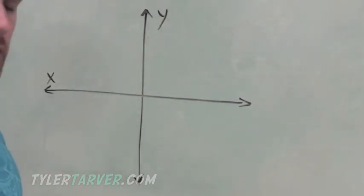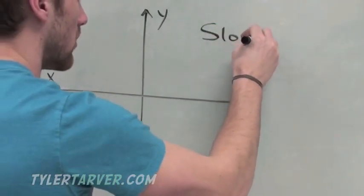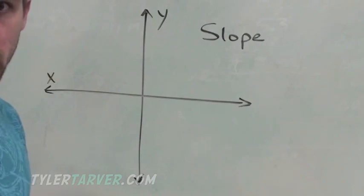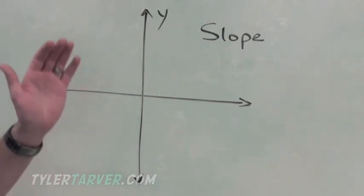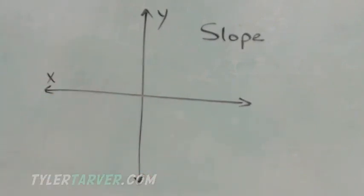Now, slope. What slope is, it tells us how far or fast that line is falling. How far it's going up or down, either way.